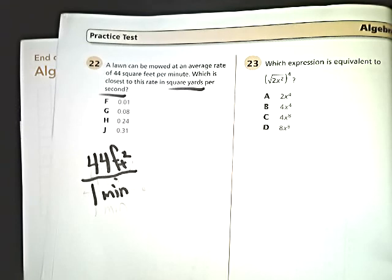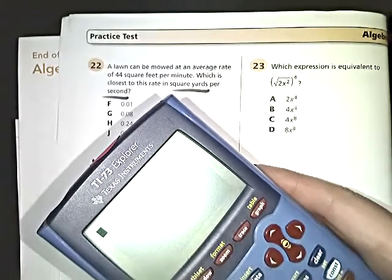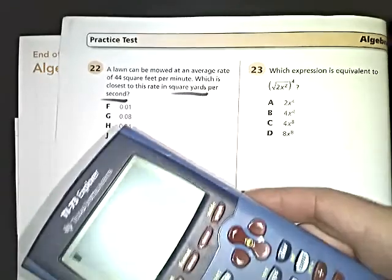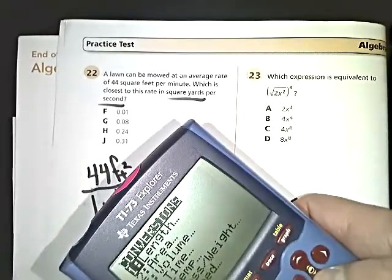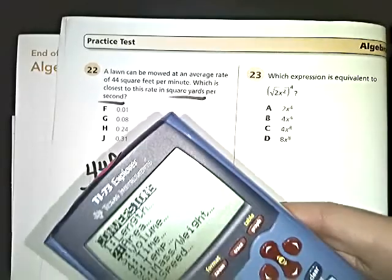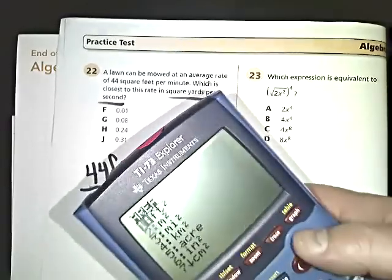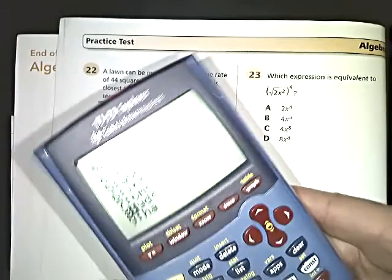If I need to know how many square yards are in a square foot, I type in one—yards is bigger than feet—so I'm going to go up to yard square, and then I'm going to click down into feet squared.